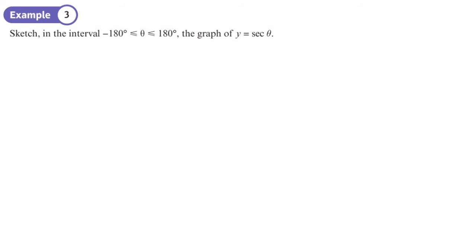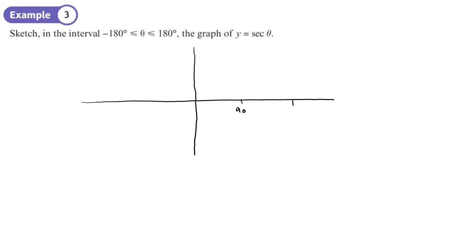We're asked to sketch the graph of sec between negative 180 and positive 180. It's useful to mark every 90 degrees, because that's where something is happening. Mark the axes: theta on the horizontal, sec theta on the vertical. Mark 1 and negative 1 — the graph doesn't go anywhere between 1 and negative 1; it lands above or below those values.